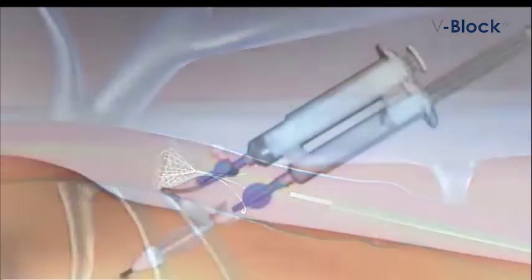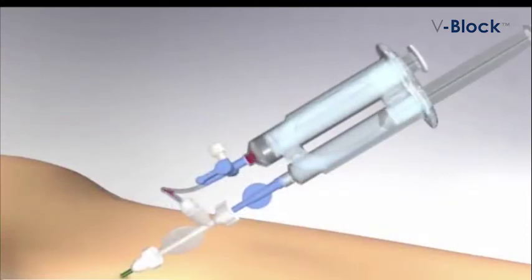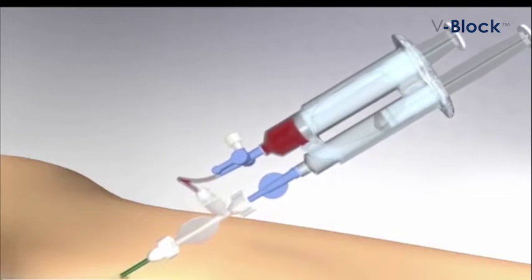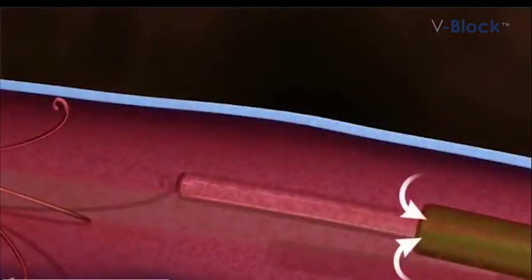At this point, the dual procedure syringe is connected to the sheath and the sclerosent agent is injected through one syringe while blood is withdrawn simultaneously through the second syringe.